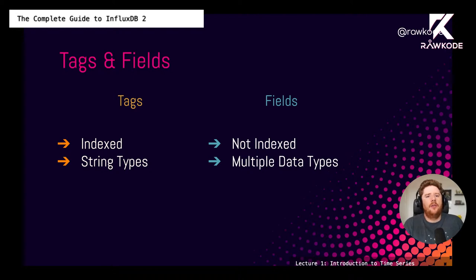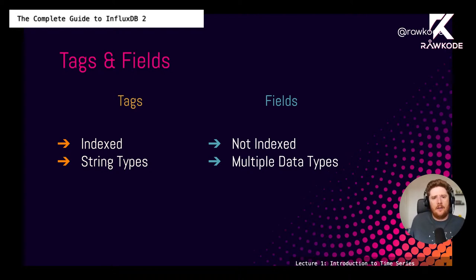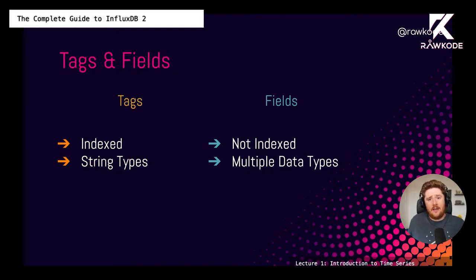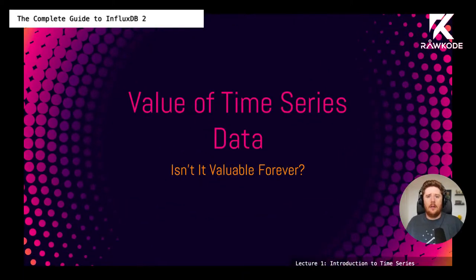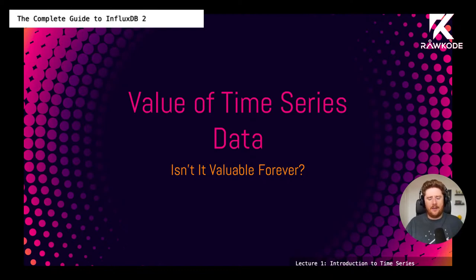When deciding what to store as tags versus fields: tags are indexed and always strings because of that constraint, whereas fields are not indexed and you can use multiple data types.